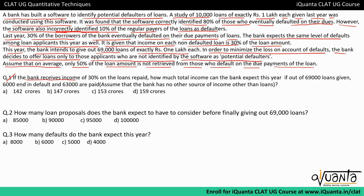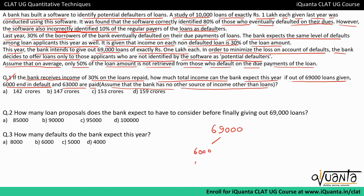Question 1: If the bank receives income of 30% on loans repaid, how much total income can the bank expect this year if out of 69,000 loans given, 6,000 end in default and 63,000 are repaid? Assume the bank has no other source of income other than loans.